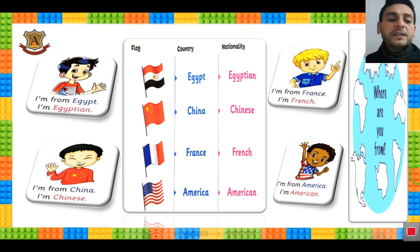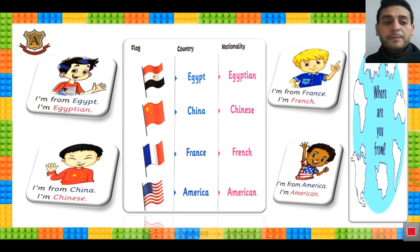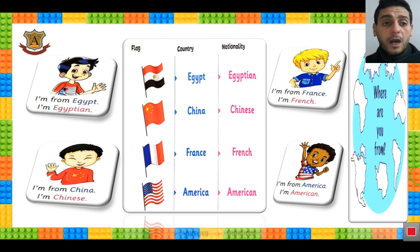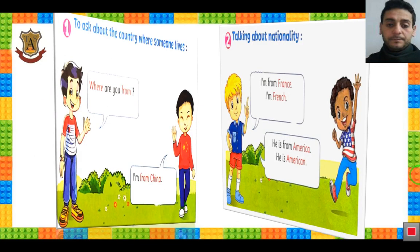Look at this boy. He is saying: I'm from Egypt. I'm Egyptian. Picture number 2: I'm from China. I'm Chinese. Number 3: I'm from France. I'm French. Number 4: I'm from America. I am American.